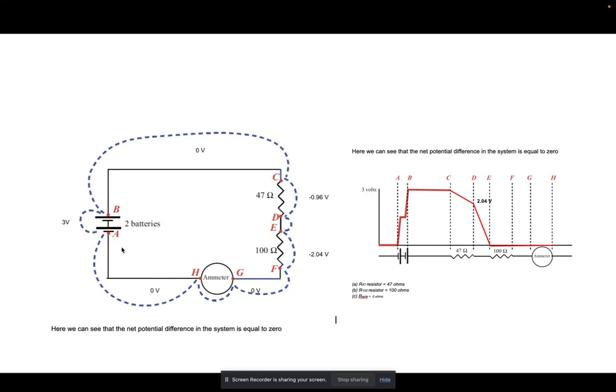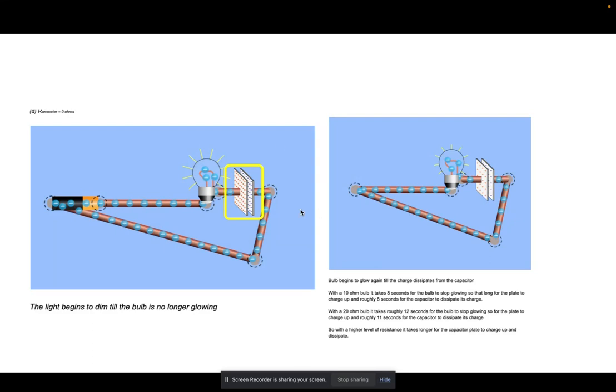We learned that the sum of the potential difference over the entire system was equal to zero. From this image on the right here, we can see how the potential difference changed in this specific circuit. It went up to three at the battery, and then you had a drop across each resistor until the potential difference was zero. This demonstrates the loop rule, as we were talking about earlier.